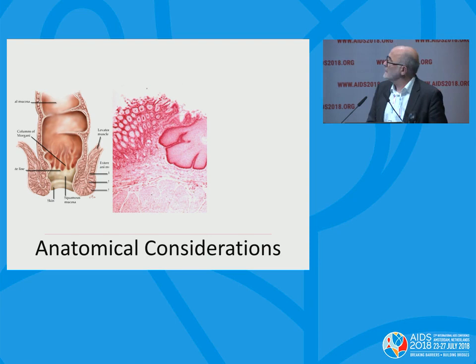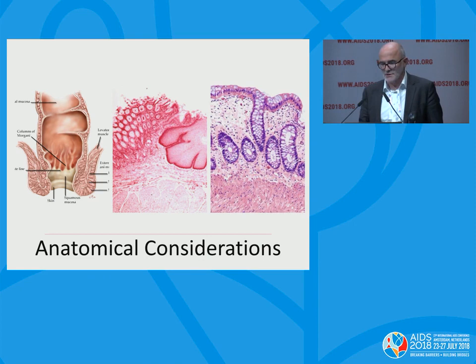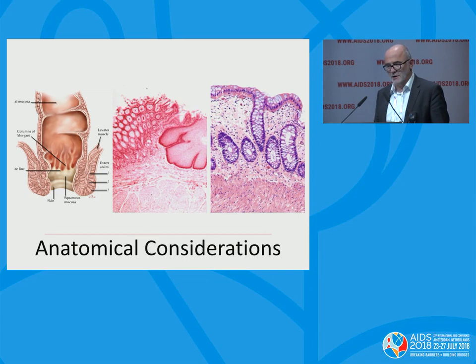This particular sample is very cross-cut, so it looks quite busy. But with a well-orientated rectal biopsy, you can see that the rectal epithelium is one cell thick — the columnar epithelium with the goblet cells — and underneath is the lamina propria, which is packed full of target cells for HIV.